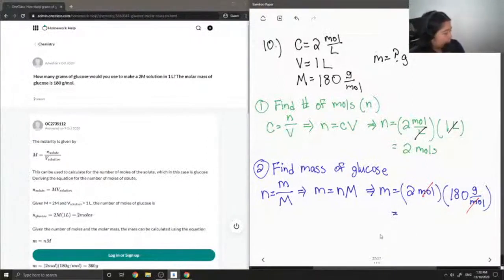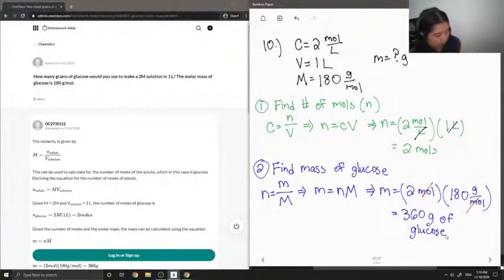So therefore, we can answer the question now. There are 360 grams of glucose. And this is used to make the two moles per liter solution in one liter.